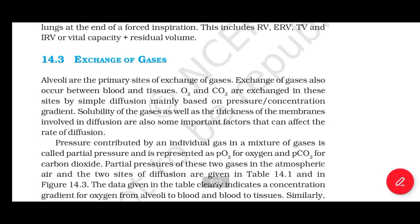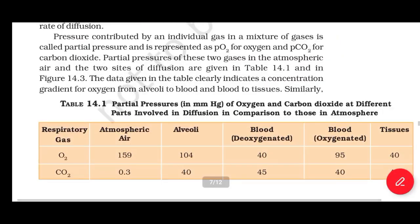Section 14.3: Exchange of Gases. Alveoli are the primary site of exchange of gases. Exchange of gases also occurs between blood and tissue. Oxygen and carbon dioxide are exchanged by simple diffusion, mainly based on pressure and concentration gradients. Solubility of the gases and thickness of the membrane involved in diffusion are also important factors affecting the rate of diffusion. Pressure contributed by an individual gas in a mixture is called partial pressure, represented as PO2 for oxygen and PCO2 for carbon dioxide.